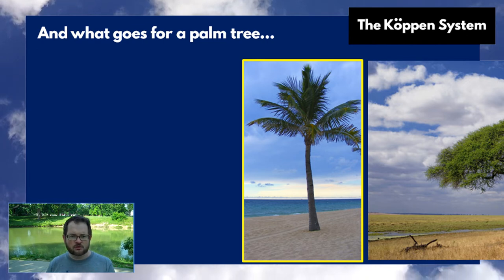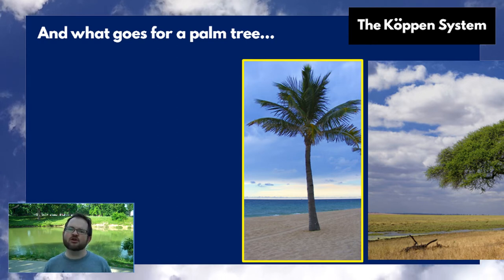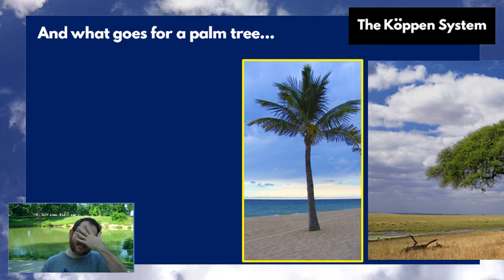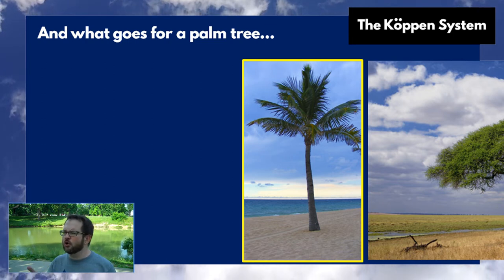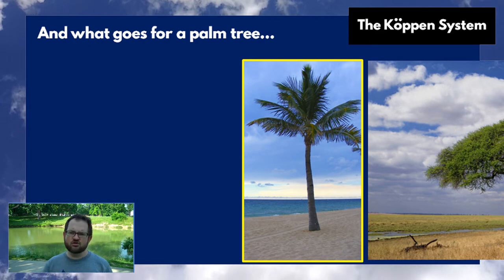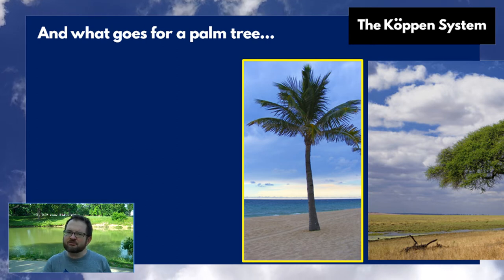For example, if you were abducted and taken somewhere, they take off the blindfold and you see palm trees — you know you're not in Canada, not in England, not in Switzerland. Palm trees tell you something about the climate of the place you're at.